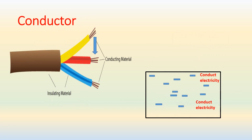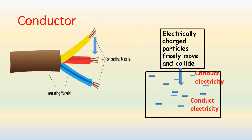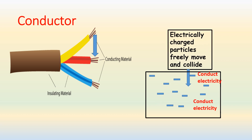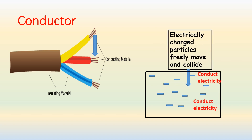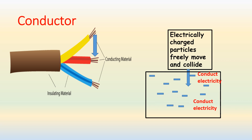Inside the copper wire, the electrically charged particles move freely and collide with each other. This creates a series of energy transfer, which is known as conduction.